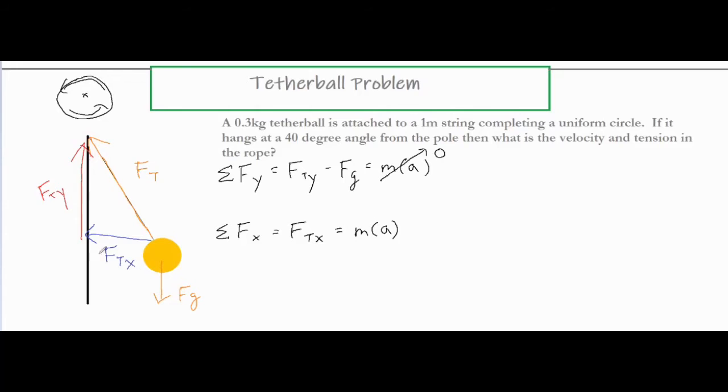This FTx is pointing towards a pole, and that pole is the center of our circle. Because it is pointing towards the center of the circle, it is our centripetal force, so we don't want to use this a. We want to go ahead and replace that with v squared over r, our centripetal acceleration.